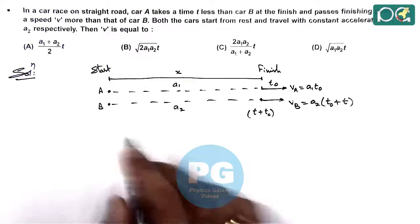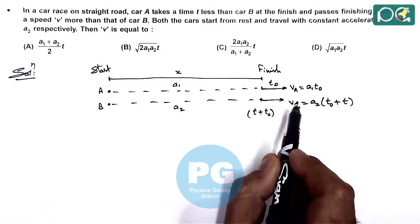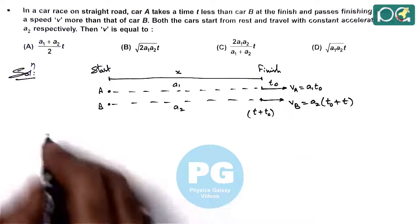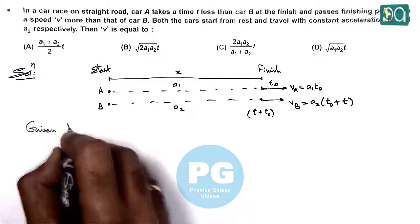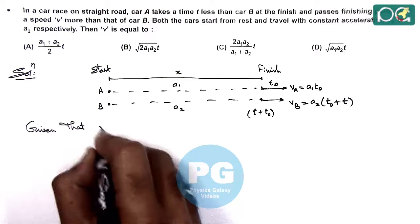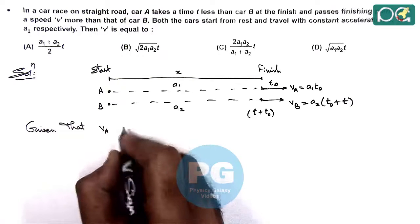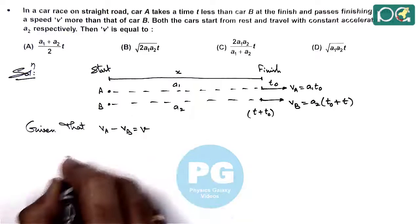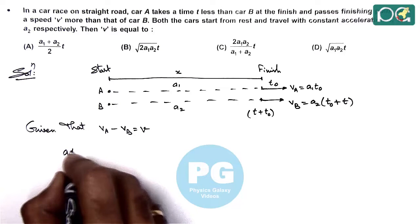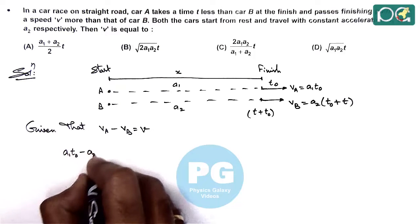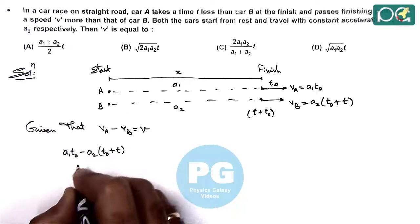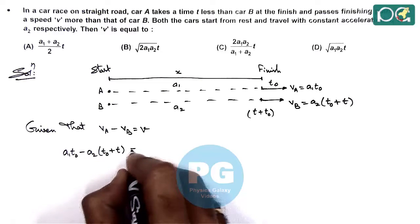And we are also given that VA is V more than VB, so we are given that VA minus VB is equal to V. So here we use a1 times t naught minus a2 times t naught plus T is equal to V.